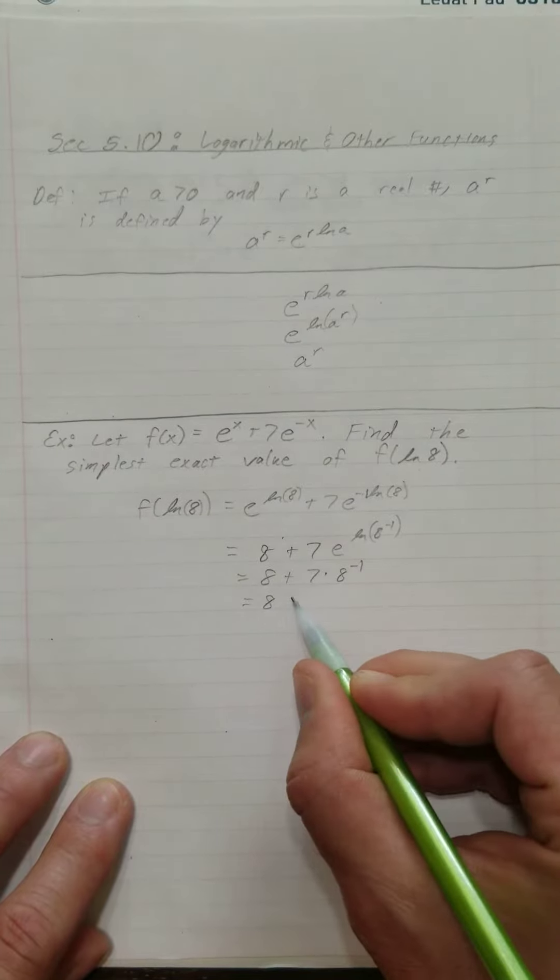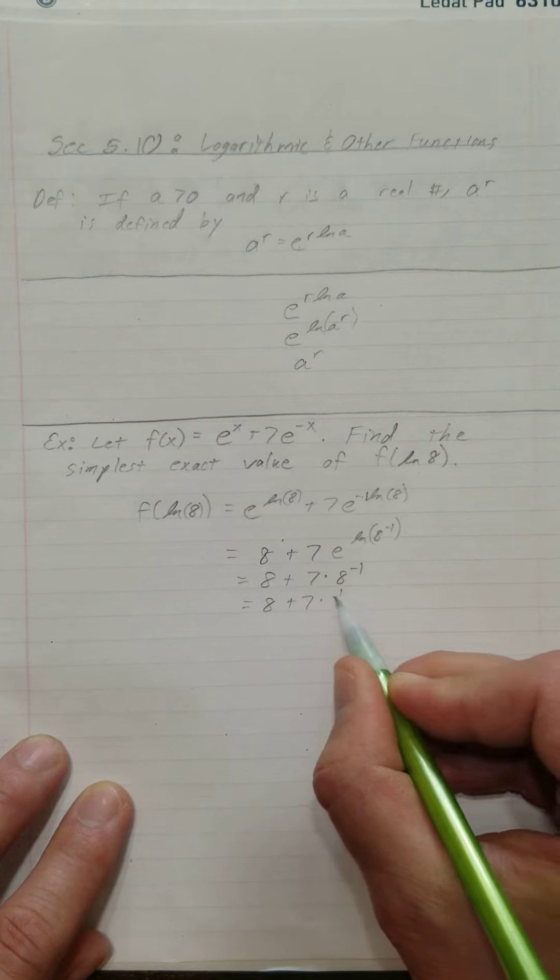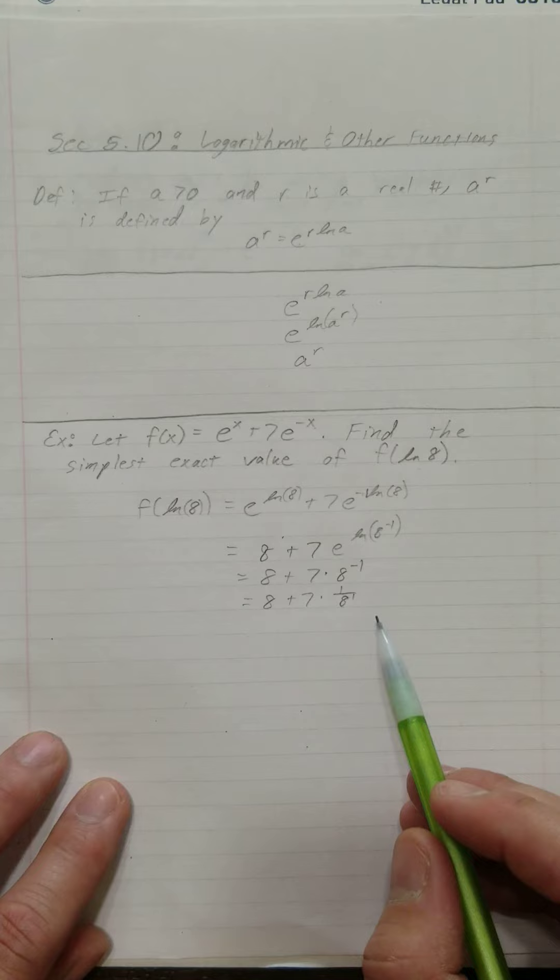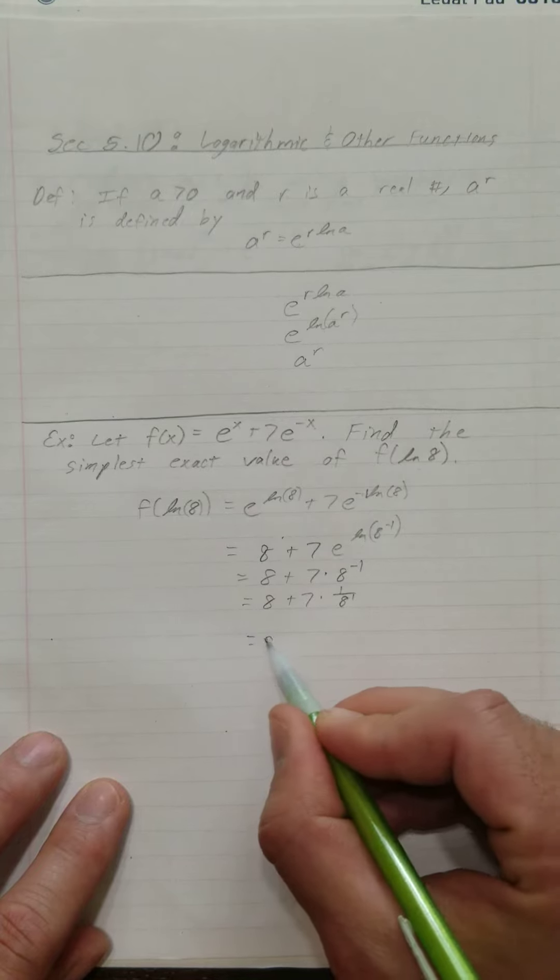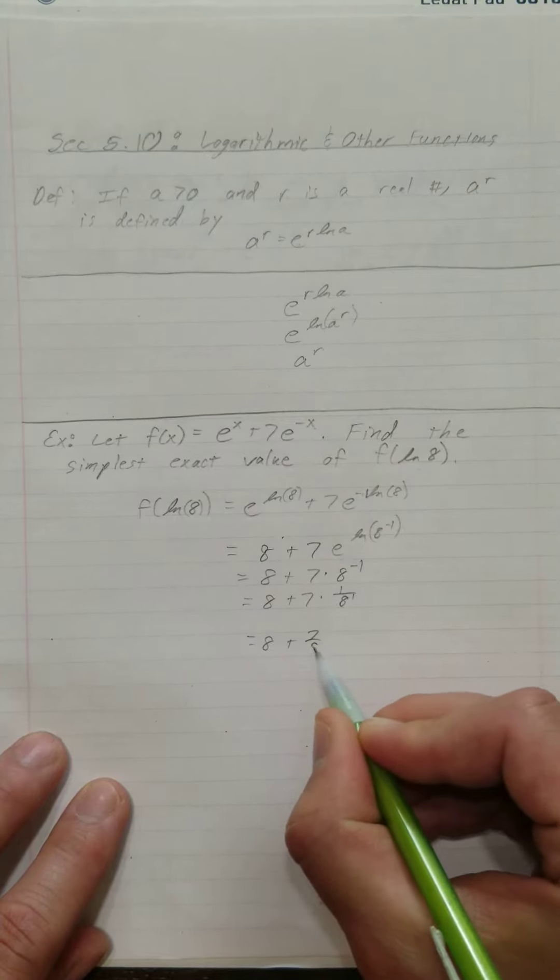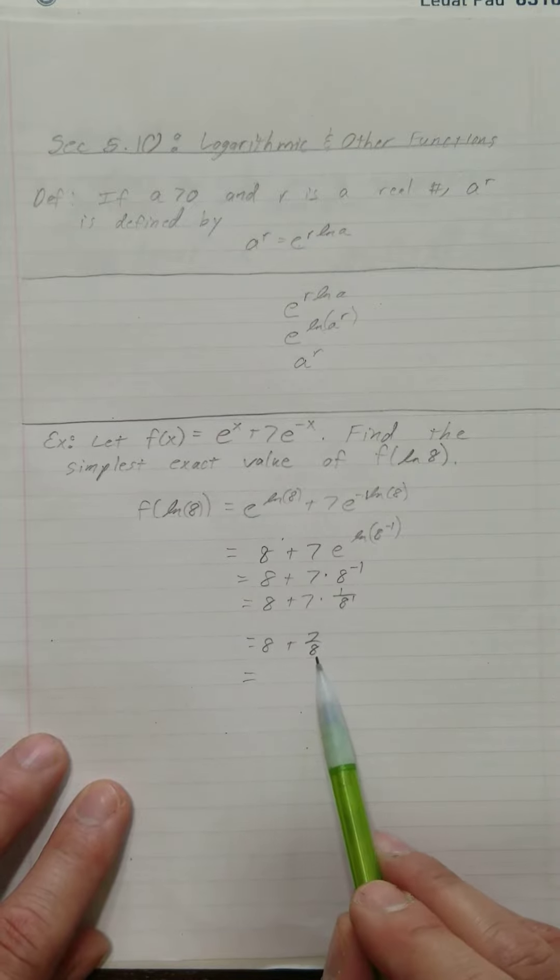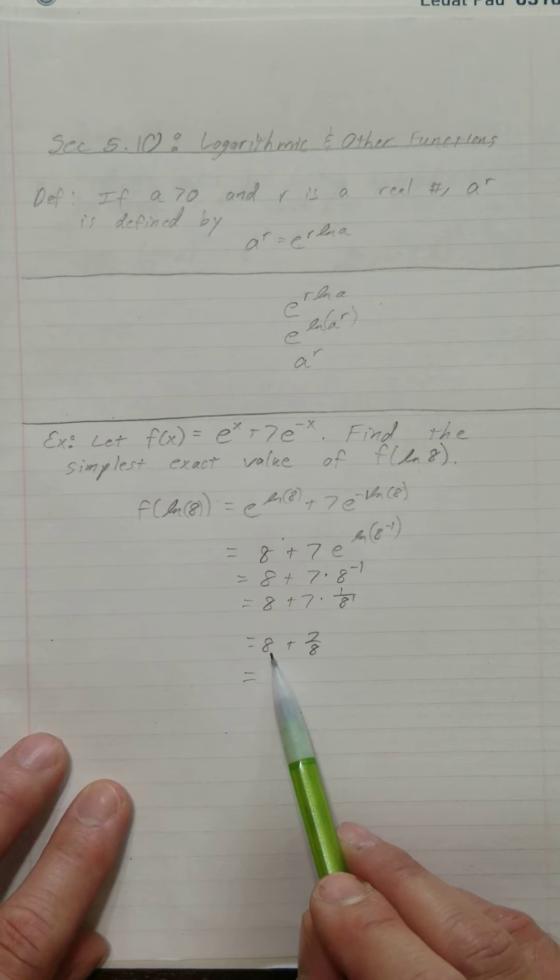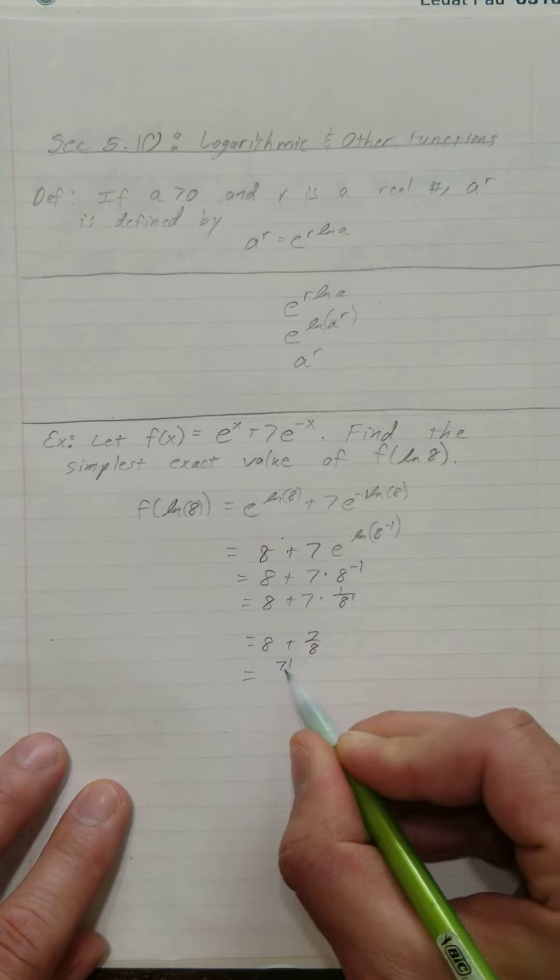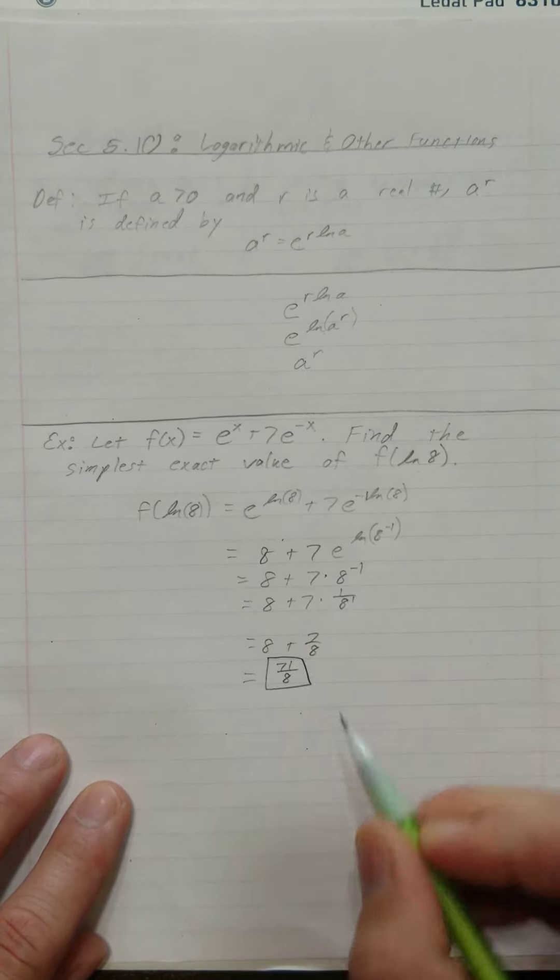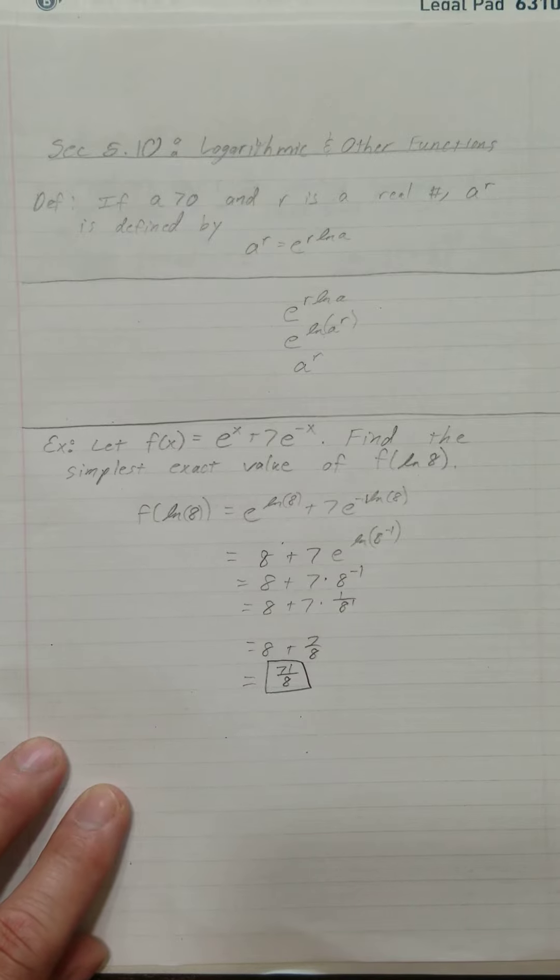Well, that gives me 8 plus 7 times 1 over 8 to the first. I could write that as... Well, that's 8 plus 7 eighths. And I get a common denominator here. What does this give me? 64 over 8? Well, 64 plus 7. 71 over 8. That's the simplest form I could put it in.